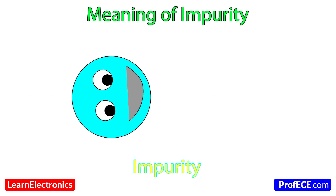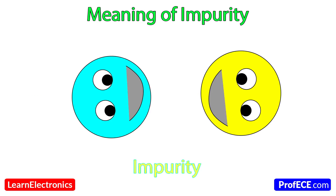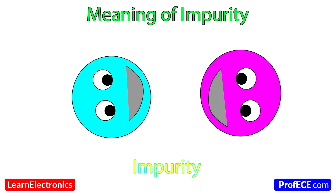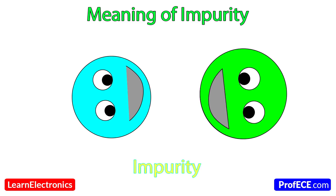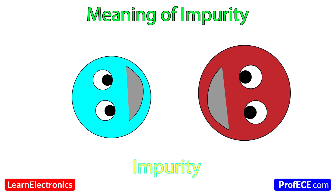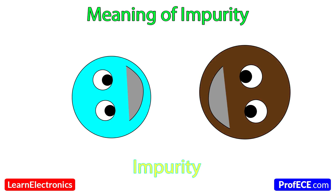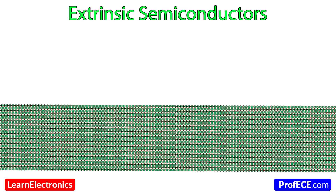Impurities means any atom other than the silicon atom — it will be considered an impurity. On the other hand, in a germanium crystal or semiconductor, silicon would be the impurity.